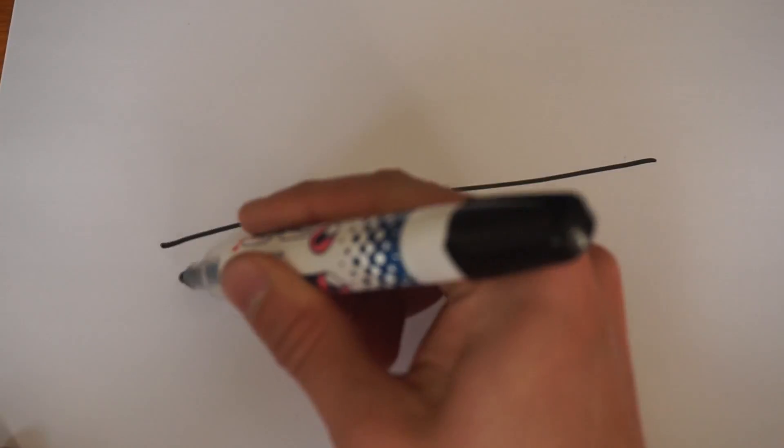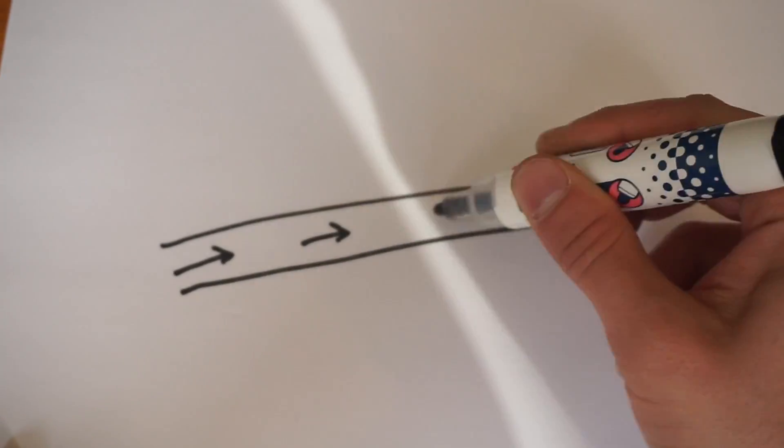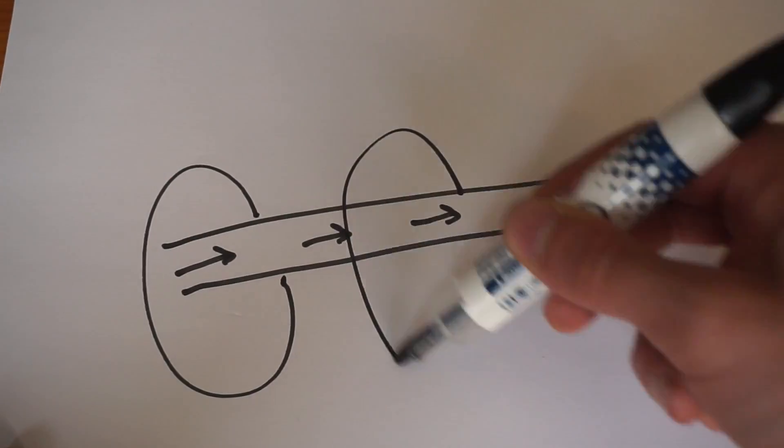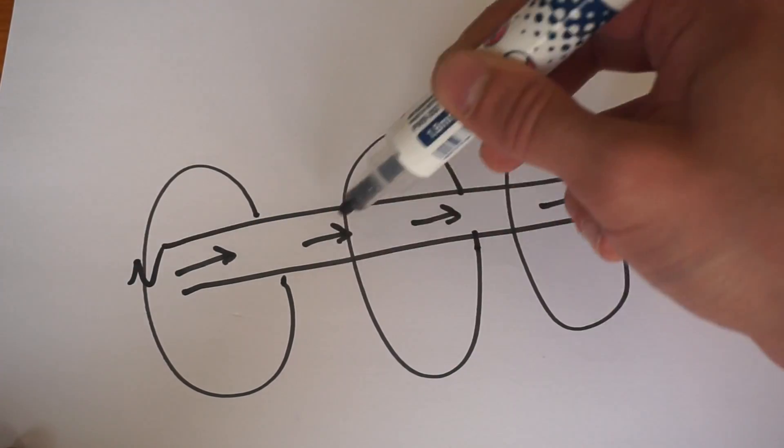First of all, consider a small section of wire with a current flowing through it, as drawn here. As a result of the current flowing through the wire, a magnetic field will be set up around it.